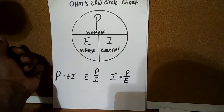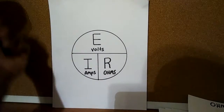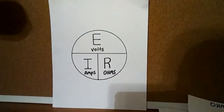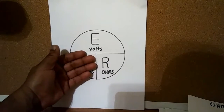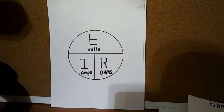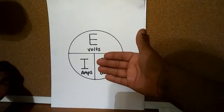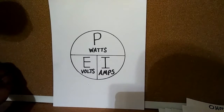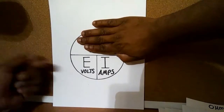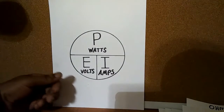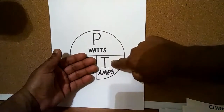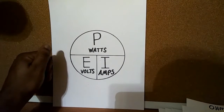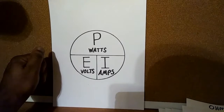So that's how you would actually use the Ohm's Law circle chart. Let's go over it one more time quickly. If the unknown value is E, you cover the E — it leaves you with I times R. If the unknown value is I, you cover the I — it leaves you with E over R. If the unknown value is R, you cover the R — it leaves you with E over I. And this is how you use an Ohm's Law circle chart to remember the formulas.